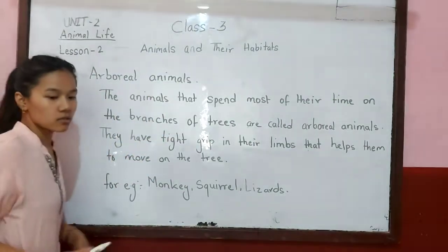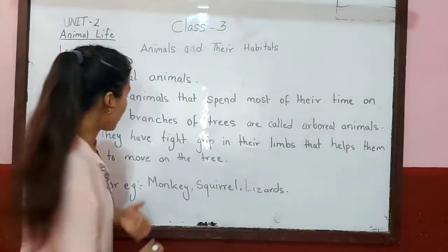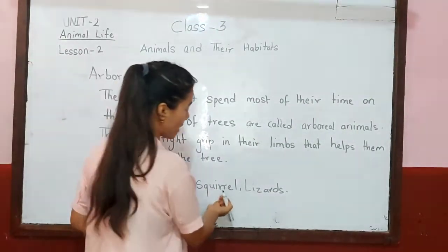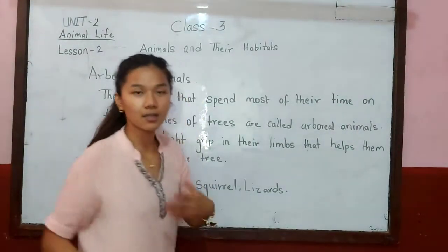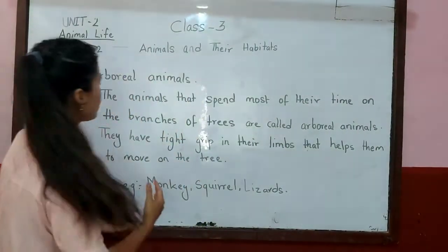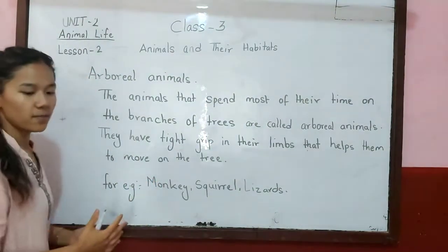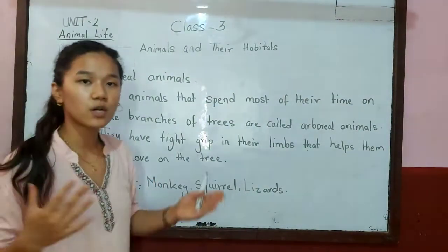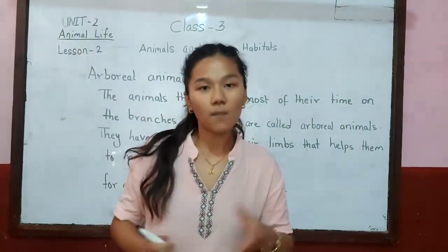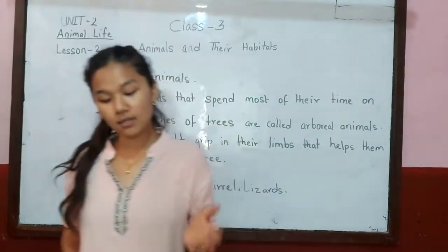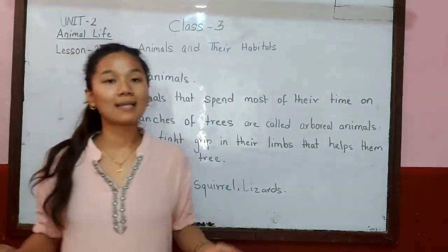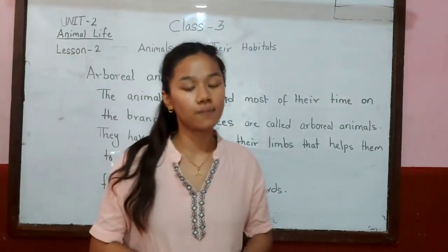Examples of arboreal animals include monkey, squirrel, and lizard. The monkey has a gripping tail to catch the branch.